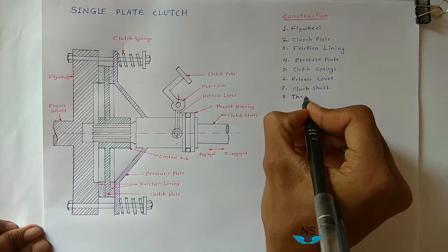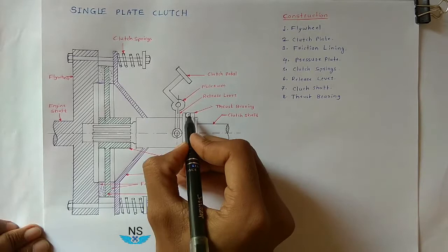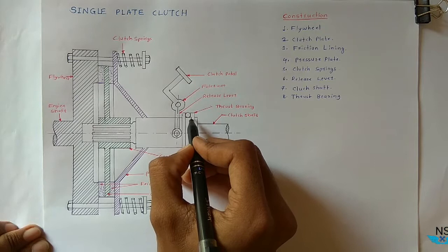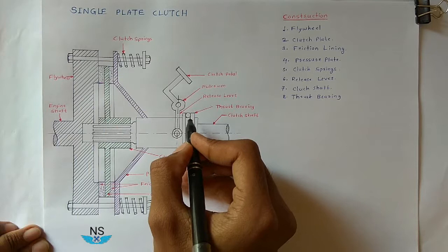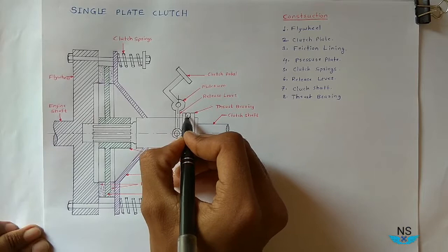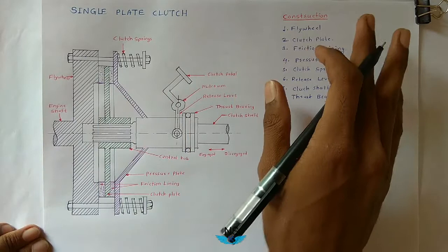The eighth part is the thrust bearing. The thrust bearing takes care of the axial load which comes during sudden release of the clutch springs. At the time of sudden release of clutch springs there is an axial force exerted on the clutch, and this bearing takes care of that axial force. These are the main parts of this single plate clutch.